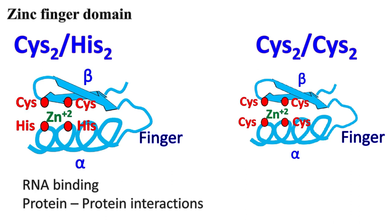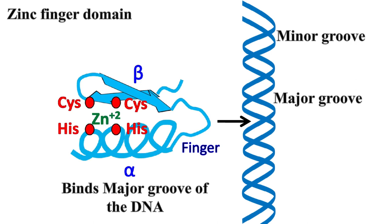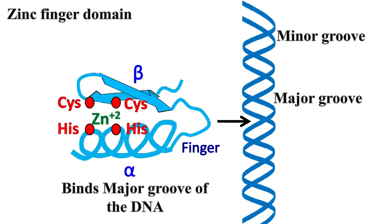The finger-like structure so formed binds the major groove of the DNA and regulates transcription. Hence, most of the transcription factors have a structural motif of zinc finger domain. The classic example of this includes transcription factor TFIIIA which has a zinc finger motif.